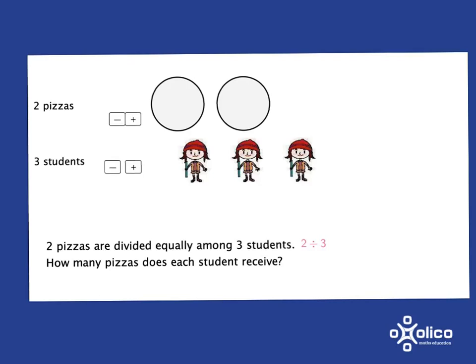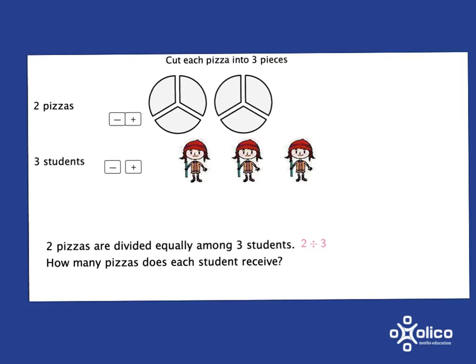If we were actually doing it in reality, what we'd end up doing is cutting each pizza into three pieces so that each person can get one of the pieces from each pizza. And so what each student will get is a piece from the first pizza and a piece from the second pizza.